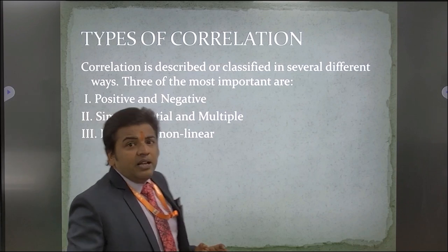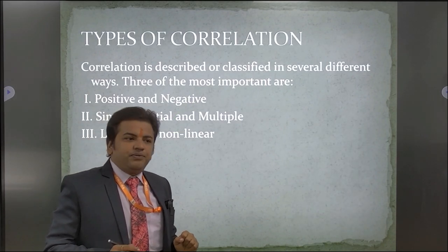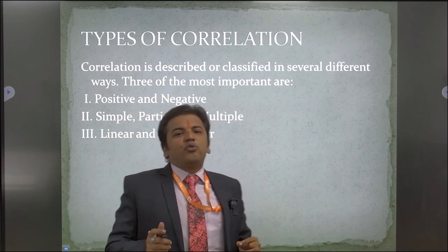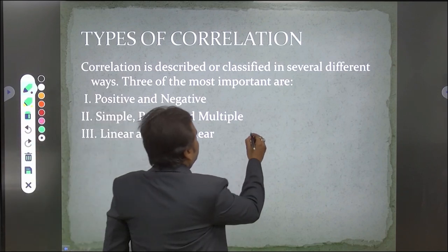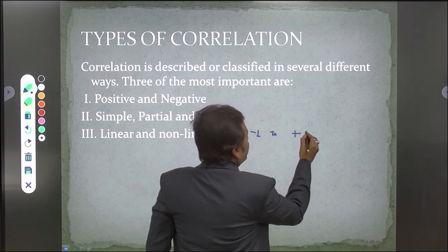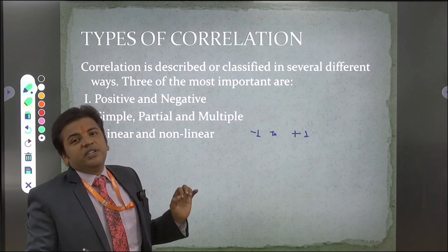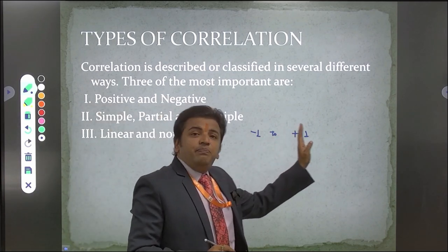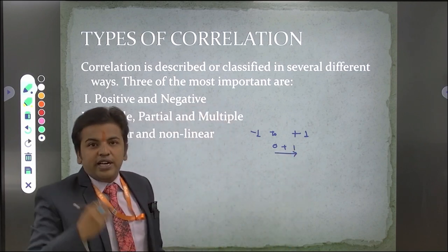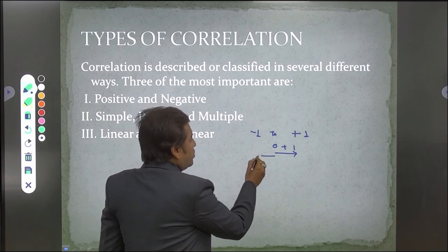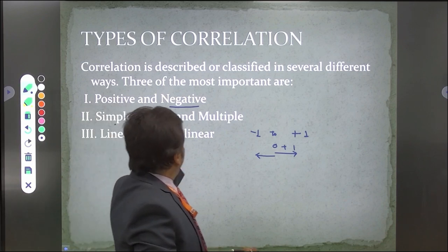There are mainly three types of correlation. The first is positive and negative correlation. The value of correlation should always be from minus 1 to plus 1. When the value is in positive direction from 0 to 1, we say it is positively correlated. When the value decreases from 0 to minus 1, we say it is a negative correlation. The second type includes simple correlation, partial correlation, and multiple correlation.